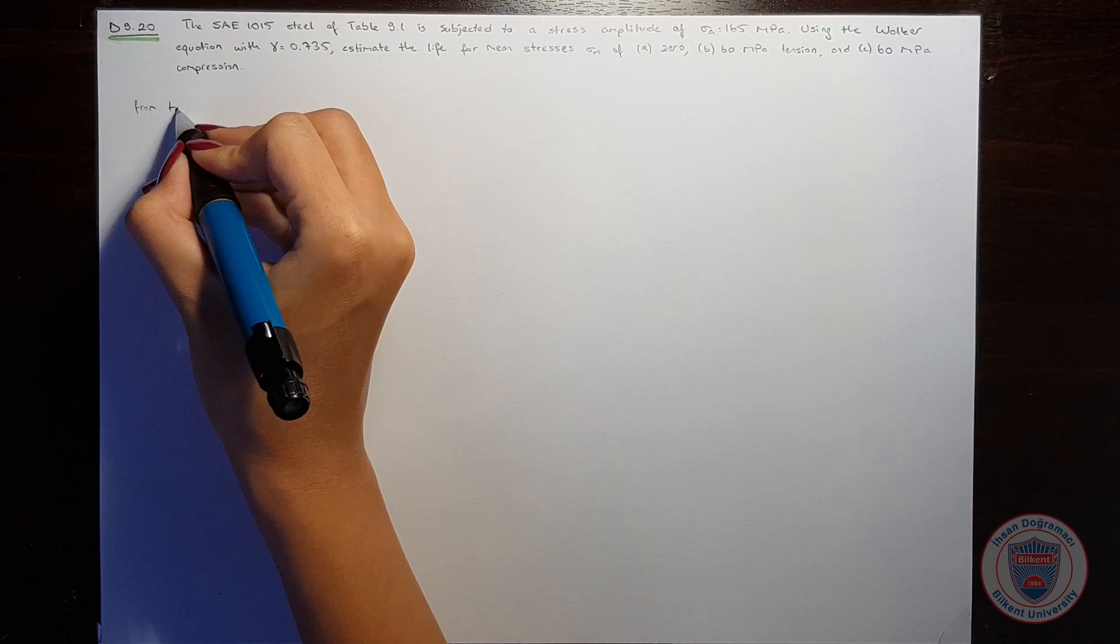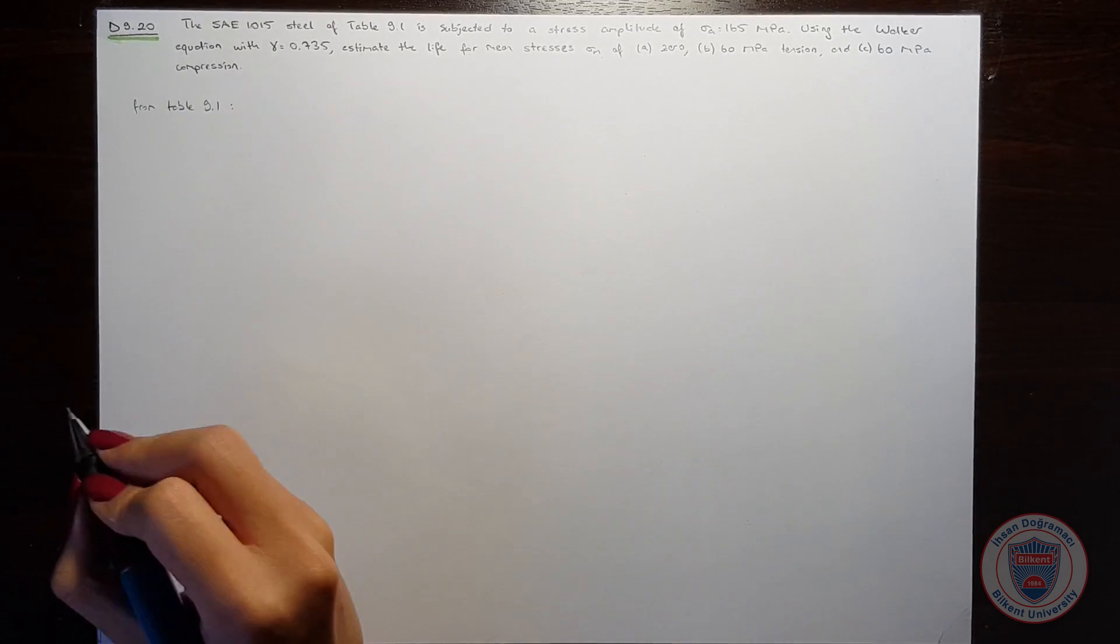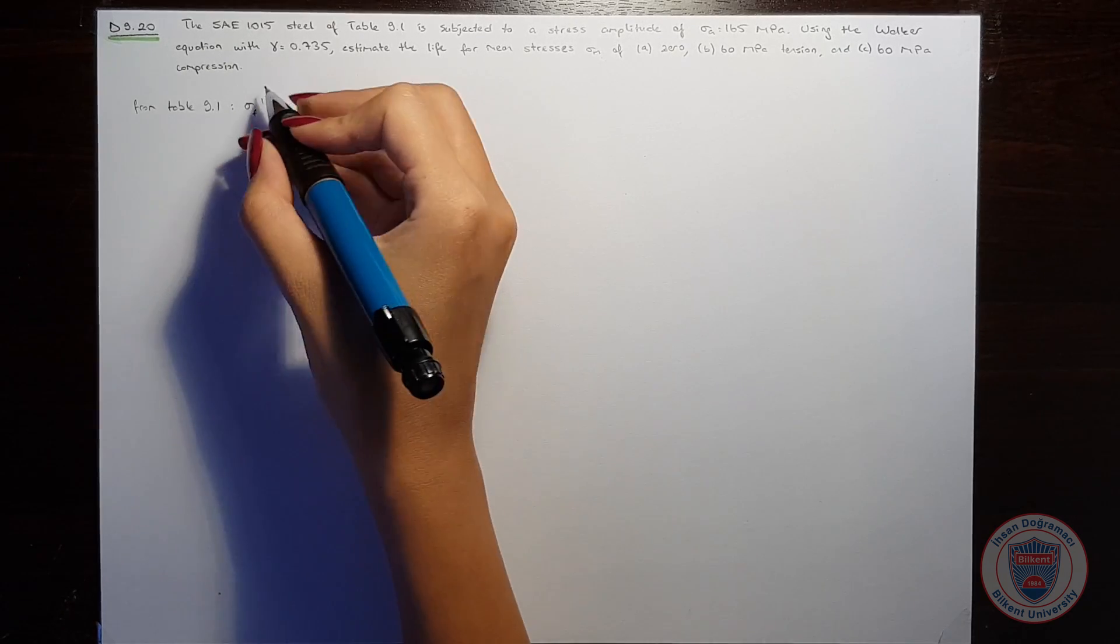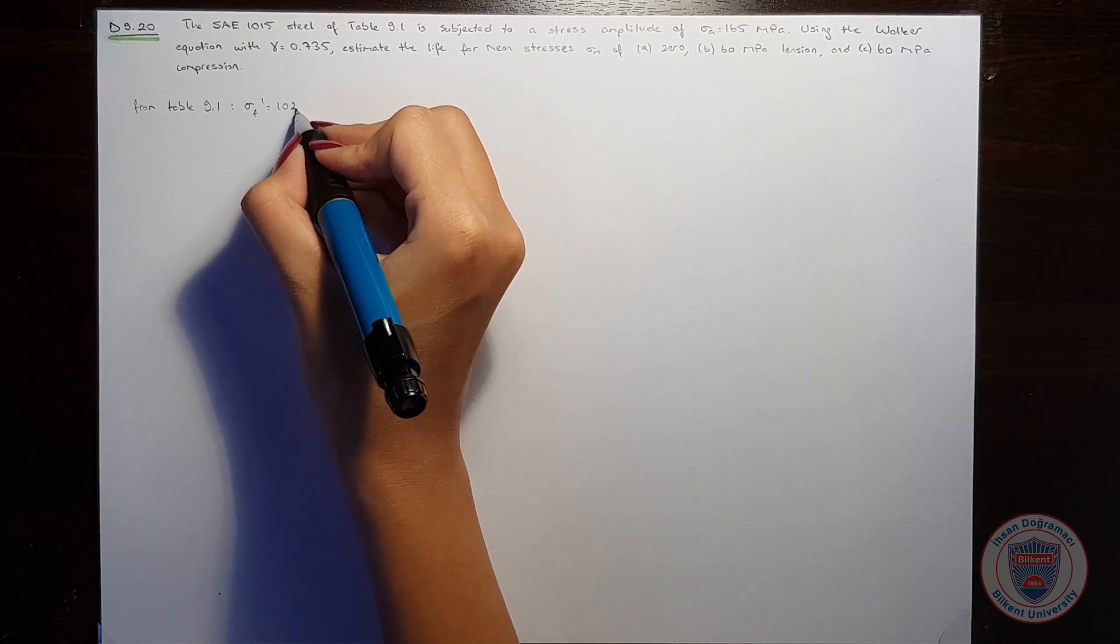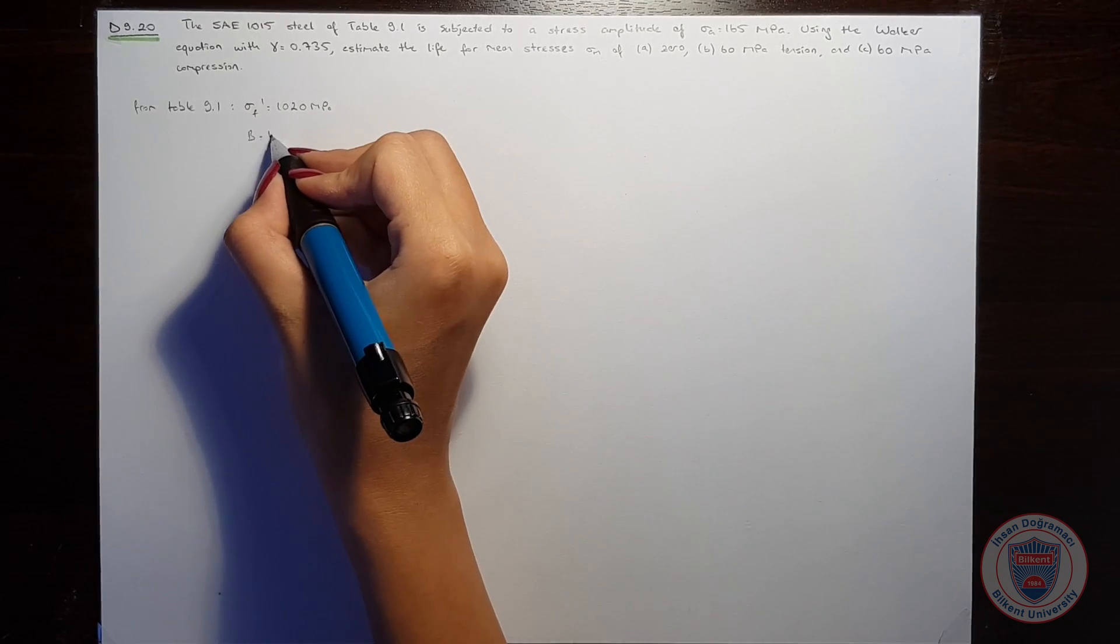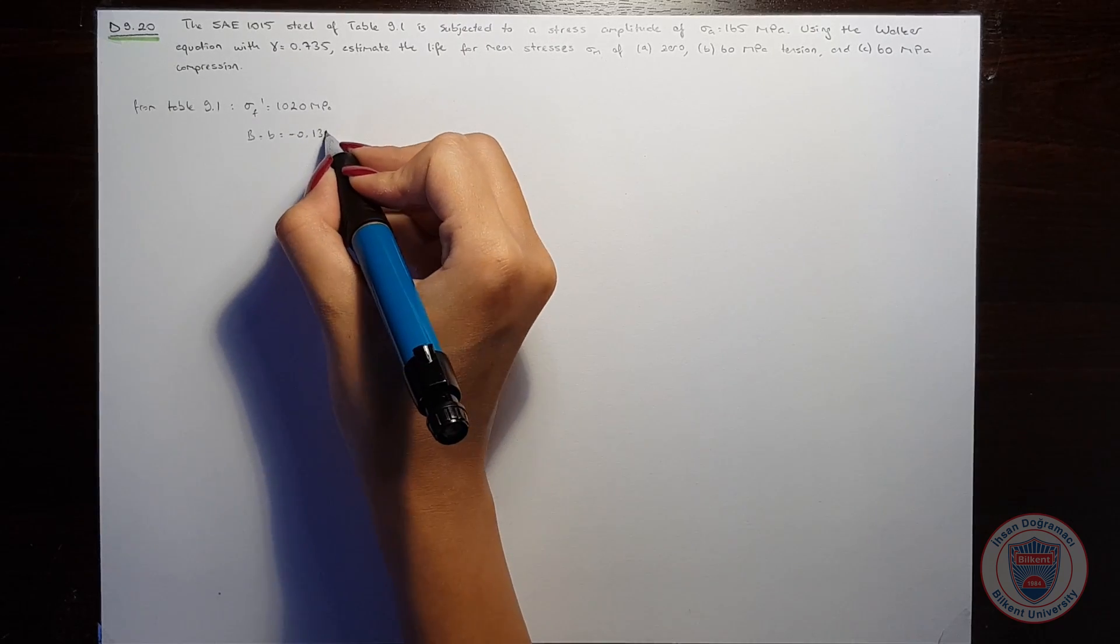From Table 9.1, we have sigma F prime equal to 1020 MPa and B equal to minus 0.138.